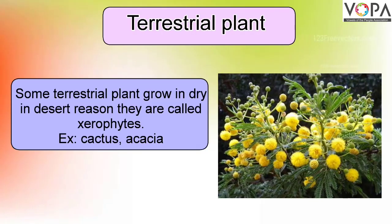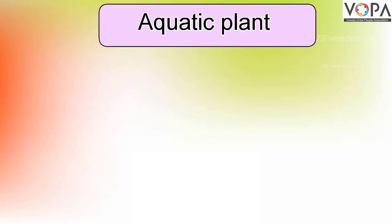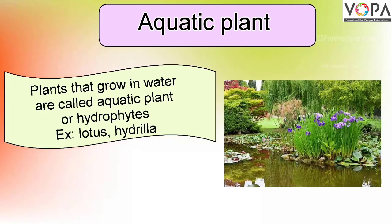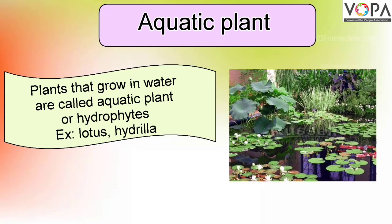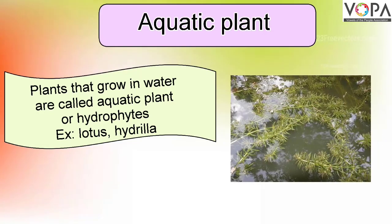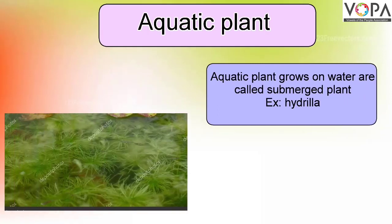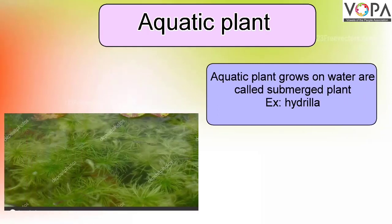Aquatic plants: Plants that grow in water are called aquatic plants or hydrophytes. For example: lotus, hydrella, etc. Aquatic plants like hydrella that grow completely in water are called submerged plants.